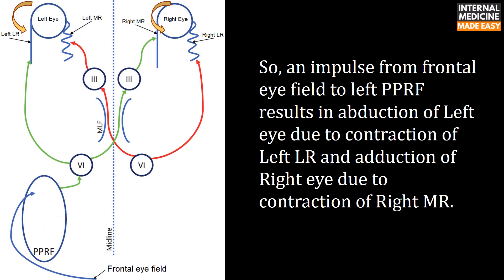An impulse from the frontal eye field to the left pontine paramedian reticular formation results in abduction of the left eye due to contraction of the left lateral rectus muscle, and adduction of the right eye due to contraction of the right medial rectus muscle.